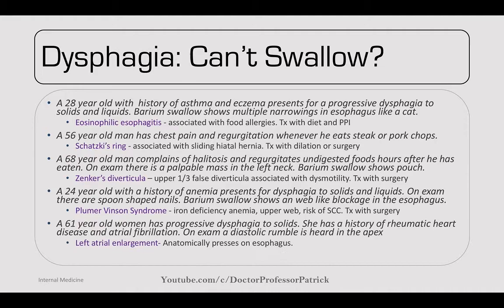Now dysphagia. A 28-year-old with a history of asthma and eczema presents with progressive dysphagia to solids and liquids. Barium swallow shows multiple narrowings — a 'cat's esophagus.' Think eosinophilic esophagitis, associated with food allergies. Treatment: identify and eliminate the dietary trigger, plus PPIs.